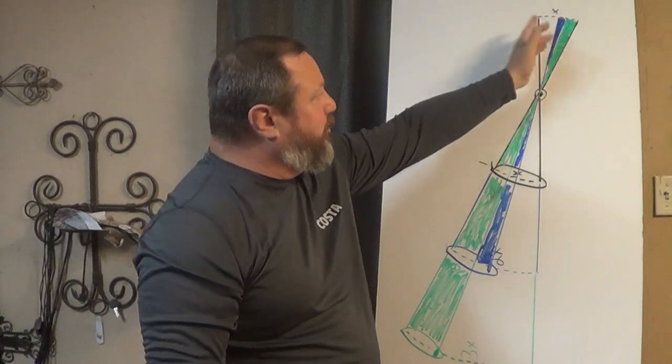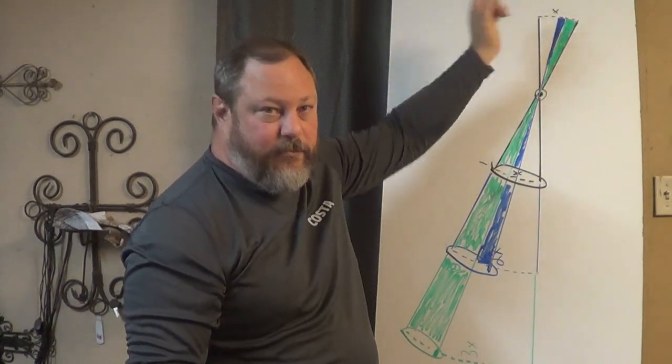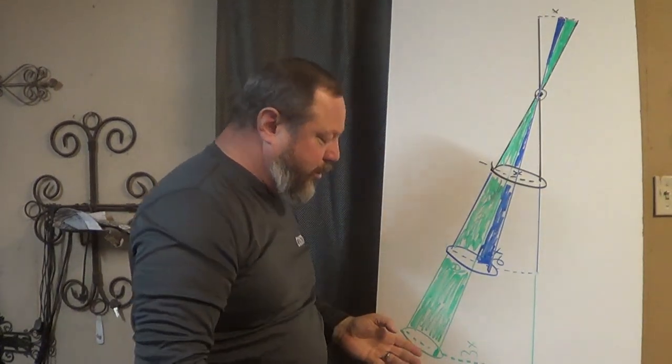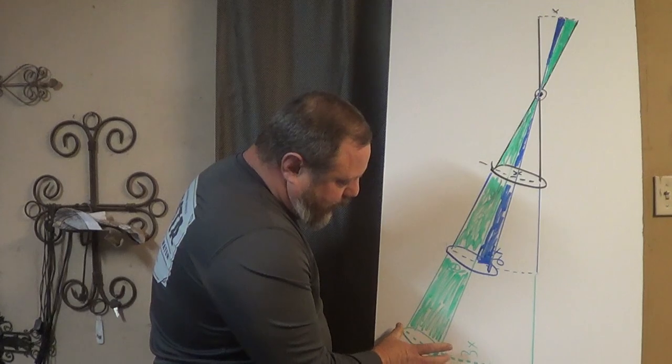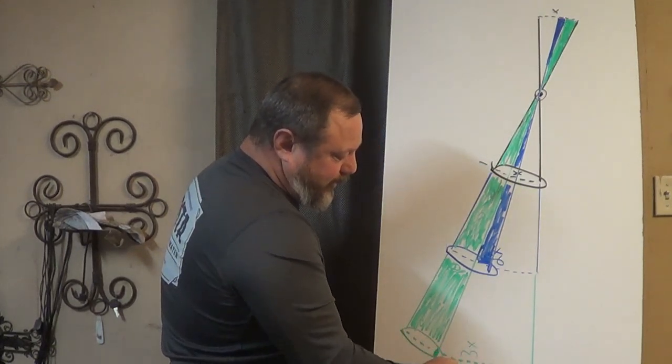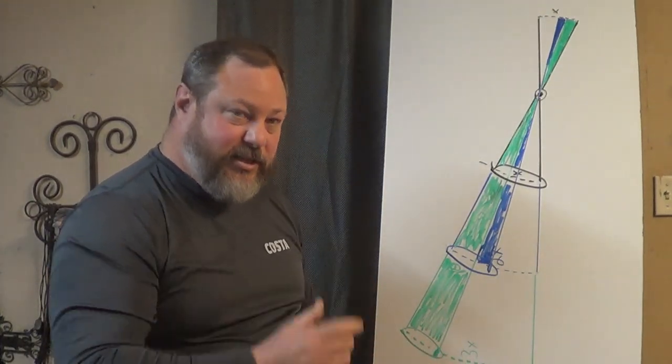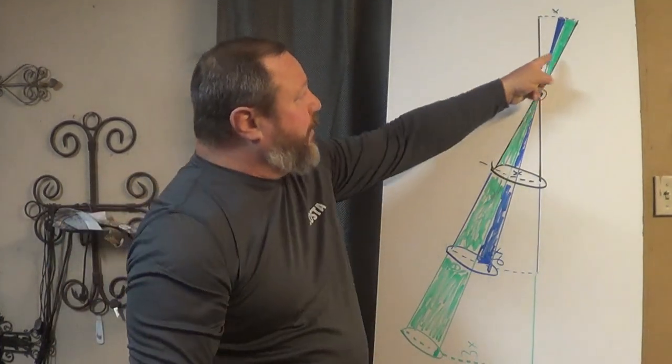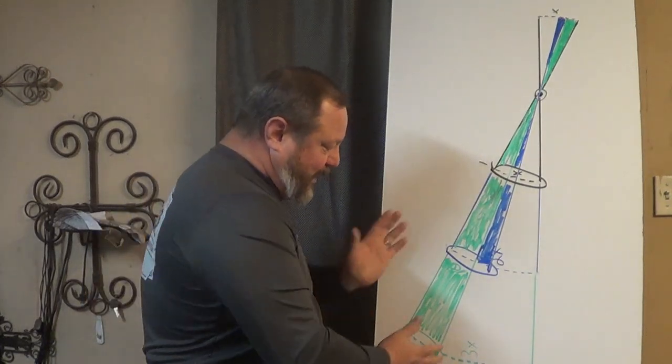It will only rotate the load half as far. And that is essentially the signal that your bit is giving to the horse. That rotation that happens above the mouthpiece is the signal. Now if we go to a longer shank, a three to one, once again, we're only going to move a third of that total distance because we had the distance tripled.